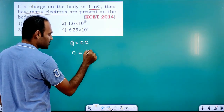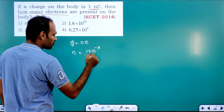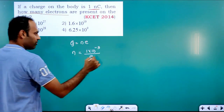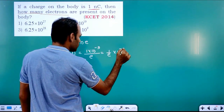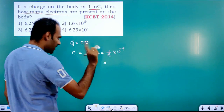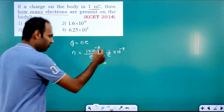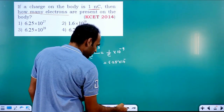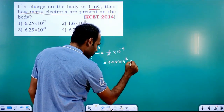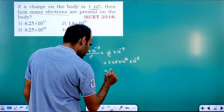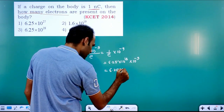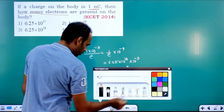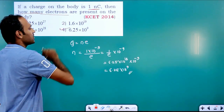The charge is 1 nanocoulomb, that is 1 into 10 raised to minus 9. So n equals q divided by e, which is 1 into 10 raised to minus 9 divided by e. We know 1 by e is 6.25 into 10 raised to 18. So n equals 6.25 into 10 raised to 18, into 10 raised to minus 9, which gives n equals 6.25 into 10 raised to 9.